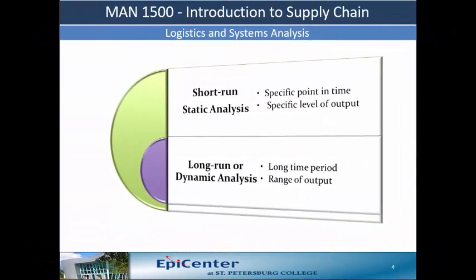A system is a set of interacting elements, variables, parts, or objects that are functionally related to one another and form a coherent group. The general tenet of the systems concept is that the focus is not on individual variables, but on how they interact as a whole.